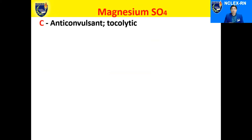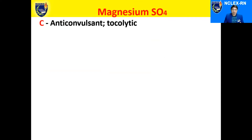So let's talk about magnesium sulfate using the CHECK framework. The classification: it's an anticonvulsant and at the same time it's a tocolytic agent. As a tocolytic, it has the capacity to relax the uterus. As an anticonvulsant, it helps prevent seizures from occurring.